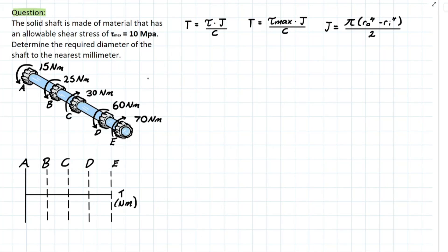Let's hop into the problem. It's asking us to analyze a solid shaft made of a material that has an allowable shear stress of 10 MPa. And it wants us to determine the required diameter of this shaft such that we do not exceed this max shearing stress.